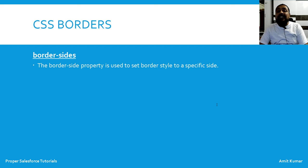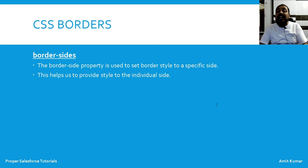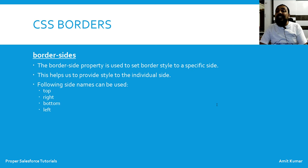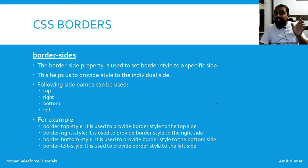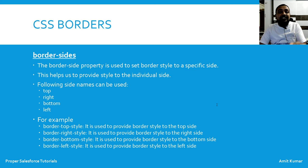The border-side property is used to set a border style to a specific side, allowing you to provide different styles to individual sides. The side names that can be used are top, right, bottom, and left. To provide a specific style to a specific side, you place the side name in between: border-side-style.